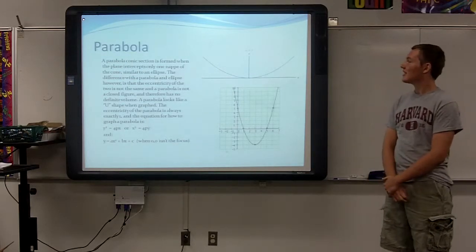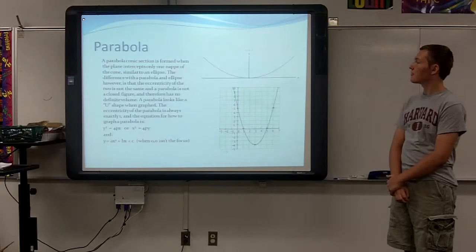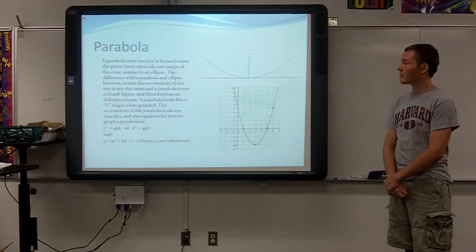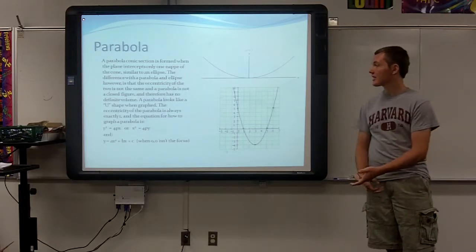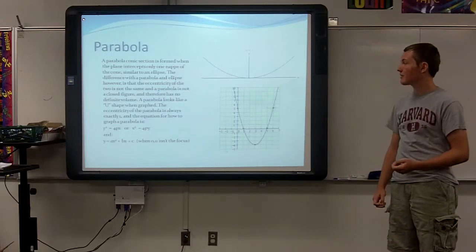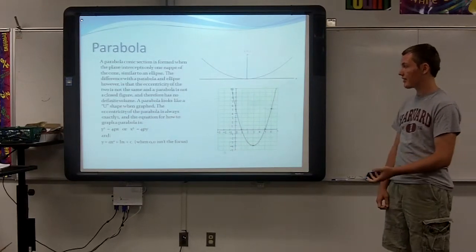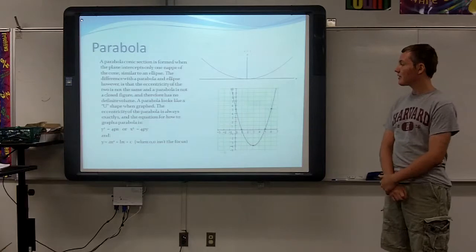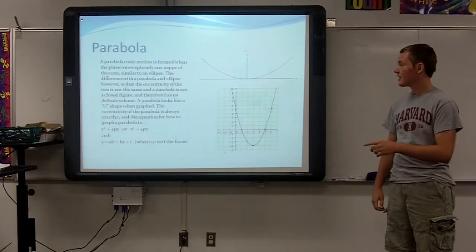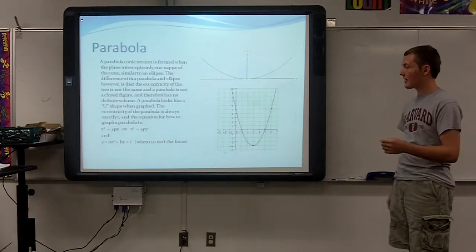A parabola. A parabola conic section is formed when the plane intercepts only one nappe of a cone similar to an ellipse. The difference with a parabola and an ellipse, however, is that the eccentricity of the two is not the same, and a parabola is not a closed figure. Therefore, it has no definite volume. A parabola looks like a U shape when graphed. The eccentricity of a parabola is always exactly one.